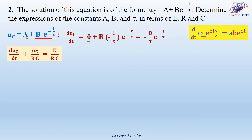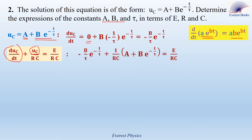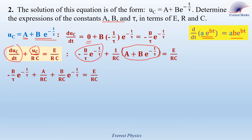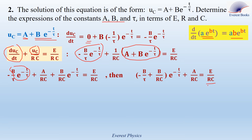Now, this is our differential equation. We replace dUC by dt and UC by their expressions. After rearranging, we get: minus B over tau times e to the power minus t over tau, plus A over RC, plus B over RC times e to the power minus t over tau, equals E over RC. Taking B times e to the power minus t over tau as a common factor, the right side is constant, so the left side must also be constant. Since the exponential function is variable, we require minus B over tau plus B over RC equals 0.